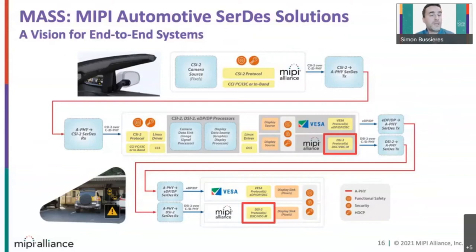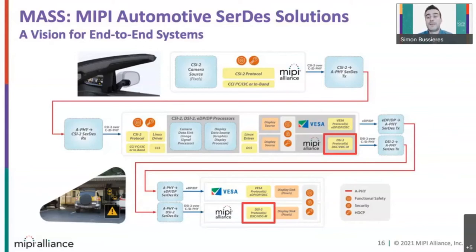As heard earlier in today's presentation, MIPI introduced the Automotive S3D solution, MAS, which comprises these two key features. DSC and VDCM compression are adopted in the PDSI-2 MAS, and include both print and visual quality. DSC and VDCM are excellent compression technologies for the automotive industry. The A-PHY provides an excellent packet error rate that is better than 10⁻¹⁹, making it safe to use video compression.